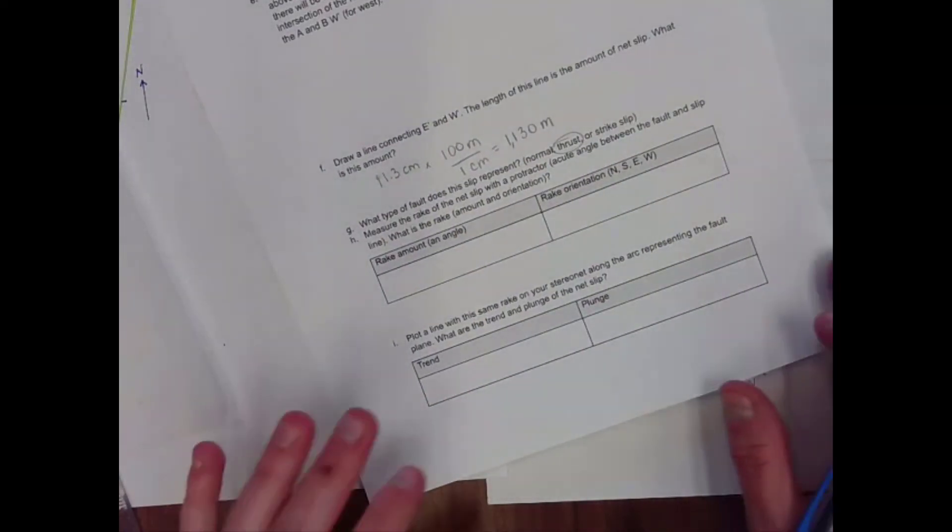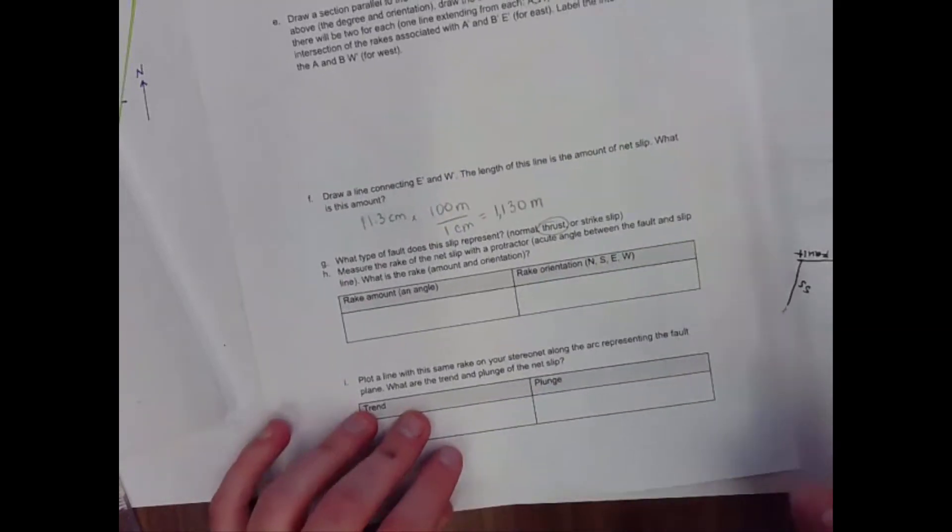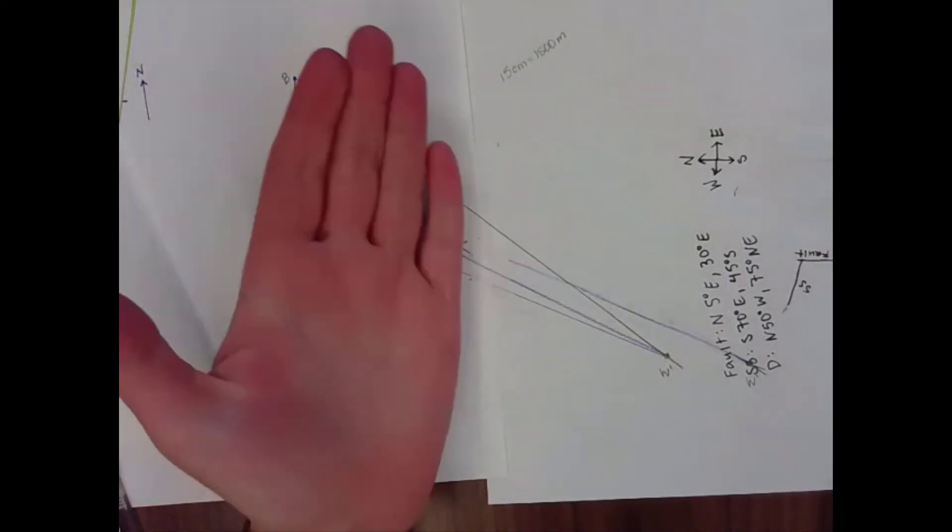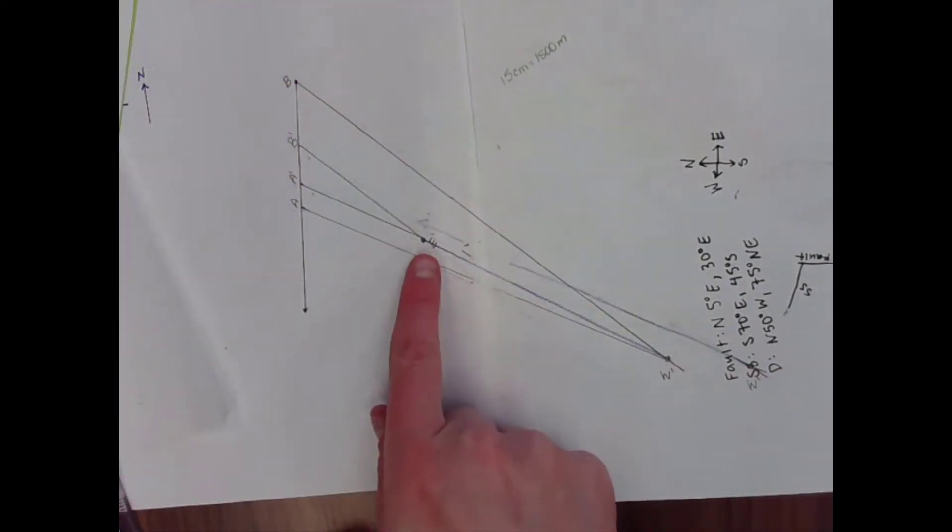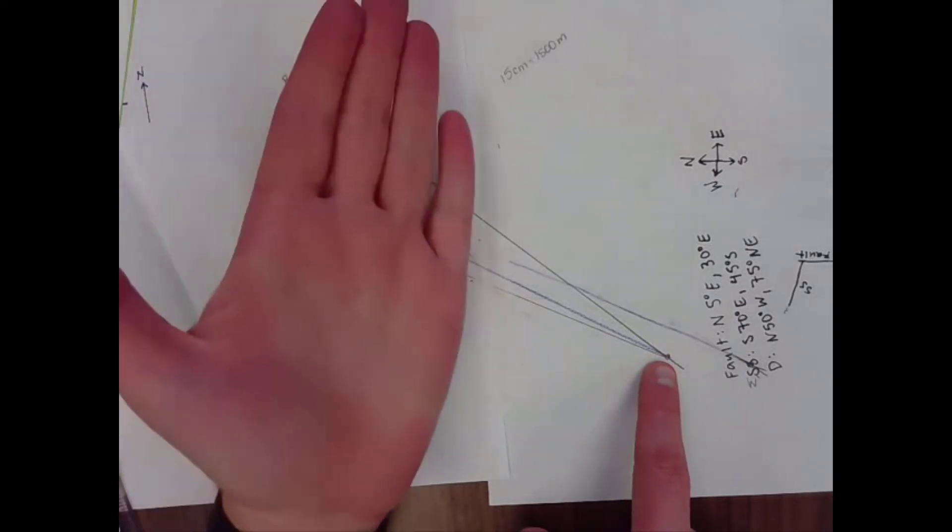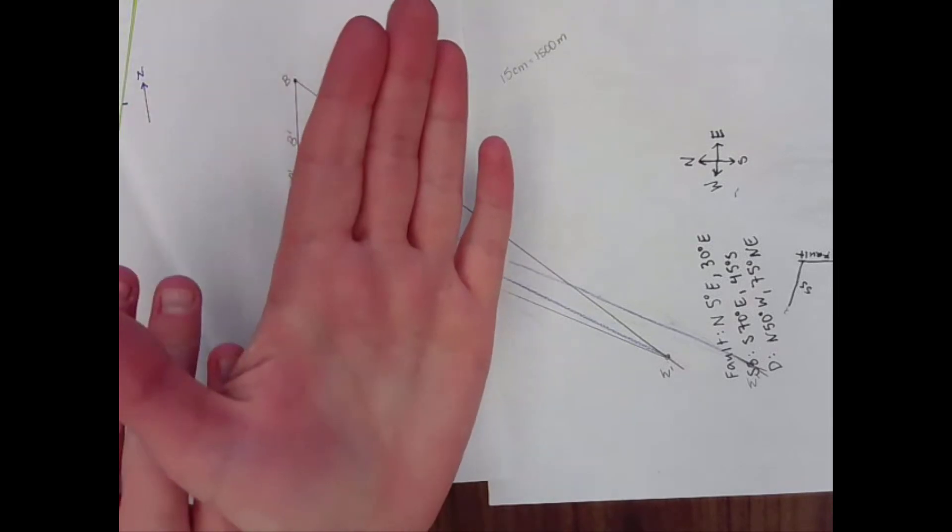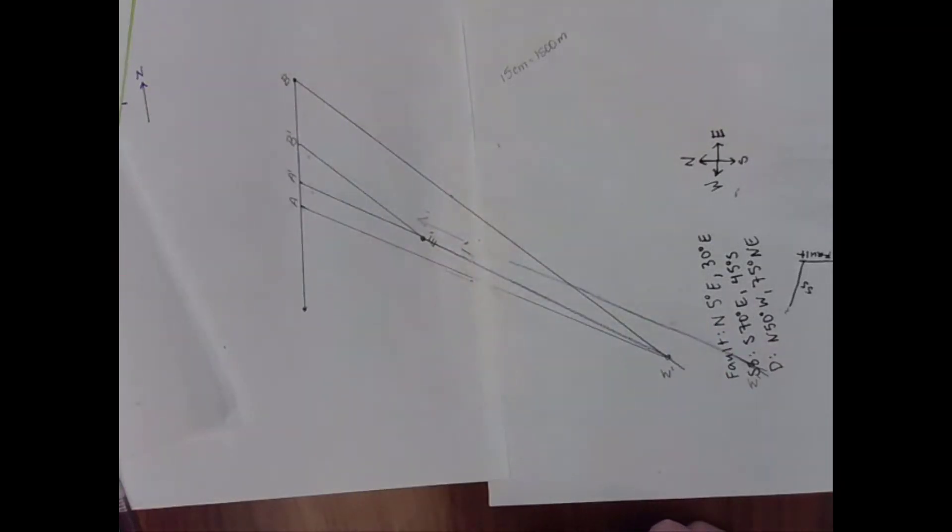What type of fault does this represent? I'm going to say it represents a thrust. The reason for that is that I know that my fault dips down into the east. And I also know that this E prime is up relative to this W prime. So my fault plane dipped like this. The east side of my fault moved up relative to my west side foot wall. That makes this a thrust fault.